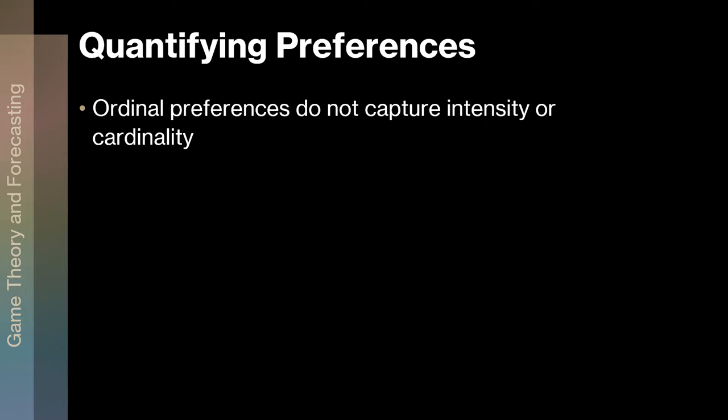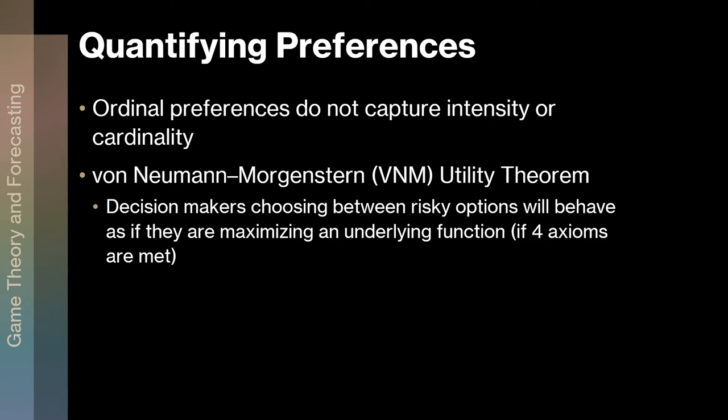They aren't going to capture intensity or what we call cardinality of preferences. This is important when you talk about things like repeated games, where we get payoffs in the future and need to discount those payoffs. So we need some quantification of value that someone sees in order to mathematically represent the choice. Do I cooperate in this round in hopes of getting cooperation in the future? We need numbers to represent all this. So we go with the von Neumann-Morgenstern utility theorem.